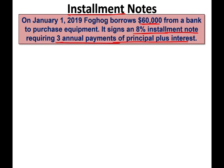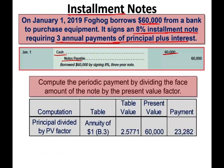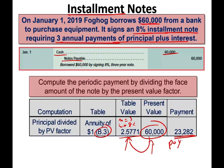The payment will include both principal and interest. When they borrow the money, they debit cash for $60,000 and record a notes payable for $60,000. Now we have to compute the payment. We take the present value of the note, which is $60,000, divided by the annuity table value where n equals 3 and i equals 8%. We take $60,000 divided by 2.577 from table B3, and we get a payment of $23,282.